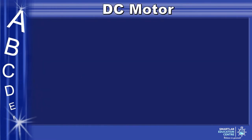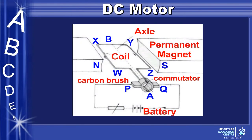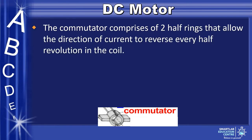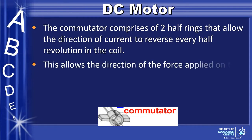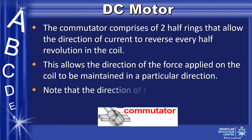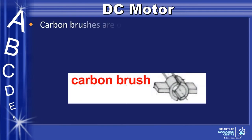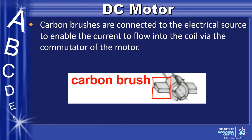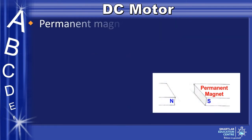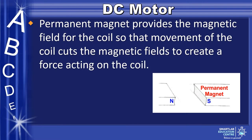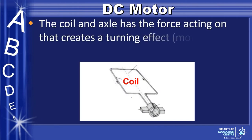One such application for electromagnetism is direct current motors, also known as DC motors. You will be required to know about the parts of a DC motor. Here is a diagram of a direct current motor. We have the commutator, which comprises two half rings that allow the direction of current to reverse every half revolution in the coil. This allows the direction of the force applied on the coil to be maintained in a particular direction. Note that the direction of the opening in the commutator is perpendicular to the coil when the coil is horizontal. Carbon brushes are connected to the electrical source to enable current to flow into the coil via the commutator. A permanent magnet provides the magnetic field for the coil, so that movement of the coil cuts the magnetic field lines to create a force acting on the coil.